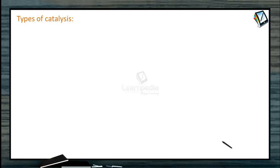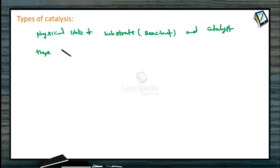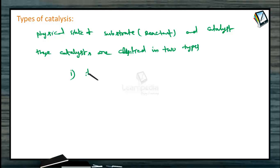Types of catalysts: based on the physical state of the catalyst and the reactant, these catalysts are classified into two types — homogeneous and heterogeneous. Based on the physical state of the substrate, meaning the reactant and catalyst, which may be gas, solid, or liquid, these catalysts are classified into two categories: homogeneous and heterogeneous.